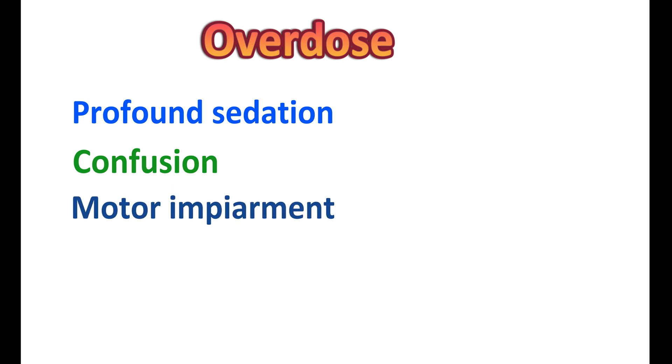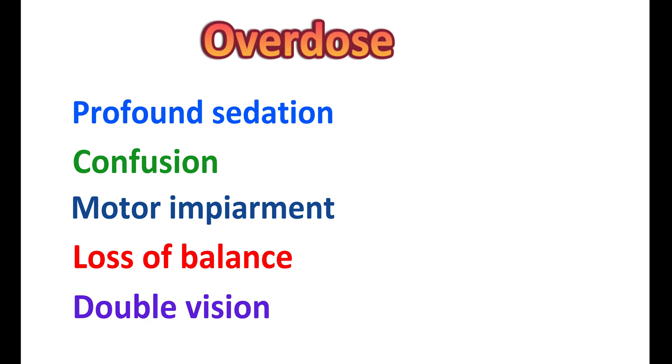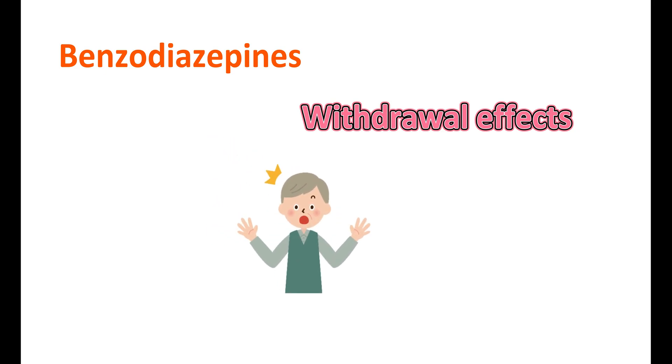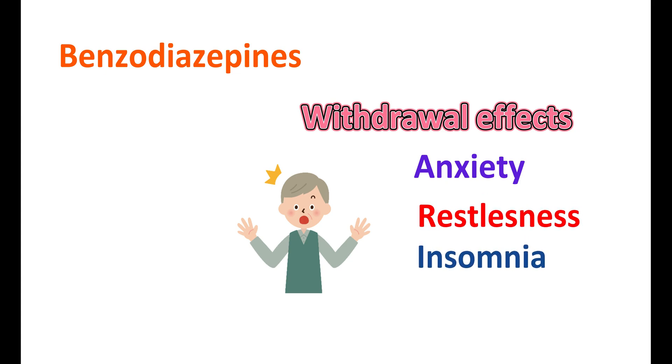Apart from these limitations, benzodiazepine overdose is also an important concern. At overdose, they can produce profound sedation, confusion, motor impairment, loss of balance, and double vision. Accidental ingestion can be treated with antidotes like flumazenil. Additionally, benzodiazepines should not be stopped suddenly — even though they have lower addiction potential, sudden discontinuation can cause withdrawal effects including increased anxiety, nervousness, restlessness, insomnia, and even an increased risk of convulsions. Therefore, benzodiazepines should be tapered gradually, particularly when used for several months.